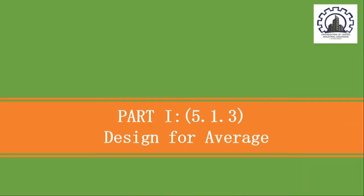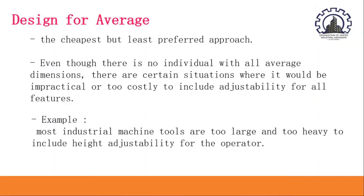The next design would be the design for average. Unlike the design for adjustability, design for average is the cheapest but least preferred approach. Even though there is no individual with all average dimensions, there are certain situations where it would be impractical or too costly to include adjustability for all features. This design for average approach is like a one size fits all solution. An example would be most industrial machine tools are too large and too heavy to include height adjustability for the operator.